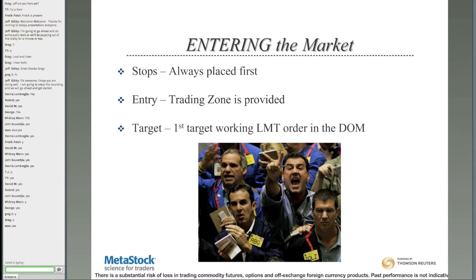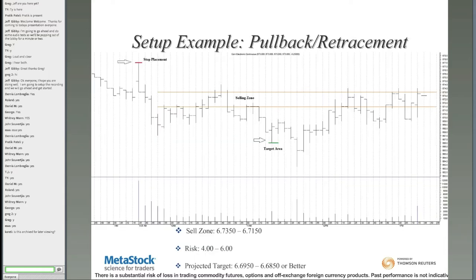Once you have the stop order ready and know what risk you want to take, you look to enter within the Trading Zone. This provides a variable price to get in that can better your risk and profit potential. You also always want to have your profit order target working in the system as well — this avoids the trap of hoping for more. If you bought and the market goes in your favor but you don't have an exit working, the market can reverse. Having that order already working means once it's triggered, you're out, and you can wait for the next opportunity.